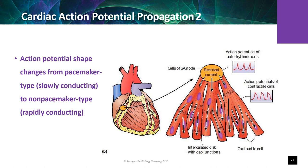Cells of the AV node have pacemaker-like characteristics with a slower intrinsic rate. The upstroke of the action potential is mediated by calcium influx through L-type calcium channels, which are slower to open, causing slower action potential propagation through the AV node. Slow conduction at the AV node serves a vital function by allowing the atria to contract first and complete ventricular filling before ventricular contraction. AV node conduction velocity is modulated by the autonomic nervous system.